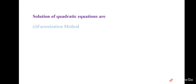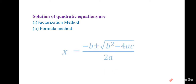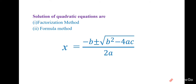The solution of the quadratic equation: there are two types of solutions we will study here — one is the factorization method and another is the formula method. The formula method uses the famous formula: x = (−b ± √(b² − 4ac)) / 2a.